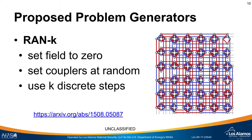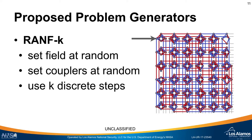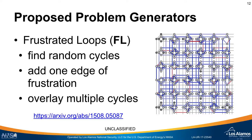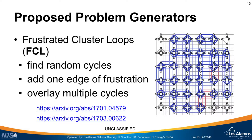We also consider the RAN-fk case, which is the same as RAN-k except now we also set the field of each variable at random. Another popular problem in the literature is the frustrated loop: you find random cycles in the network, add one edge of frustration to each cycle, then overlay multiple cycles. This has the nice property that you can know the lowest energy state based on how you set it up. Another recently studied variant is the frustrated cluster loop, where each unit cell of eight bits is linked together with strong coupling so all bits want to take the same value.